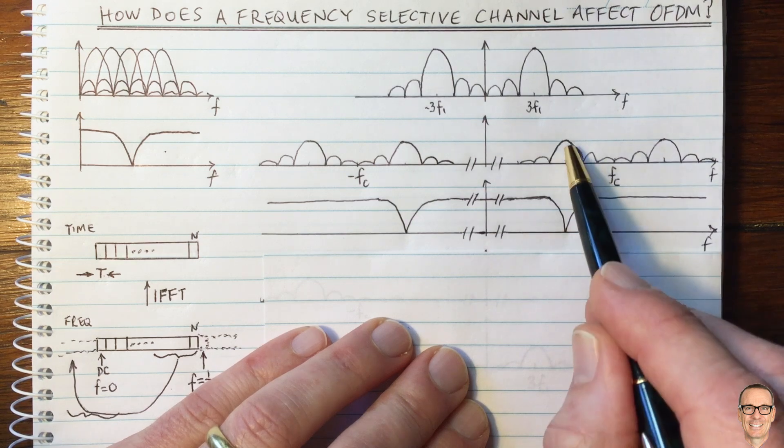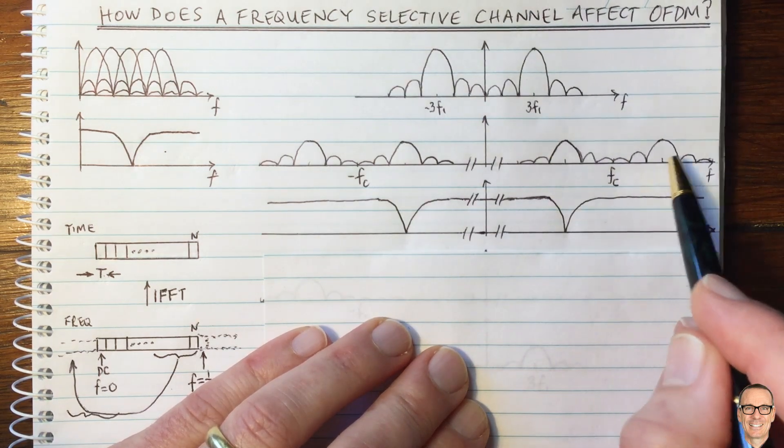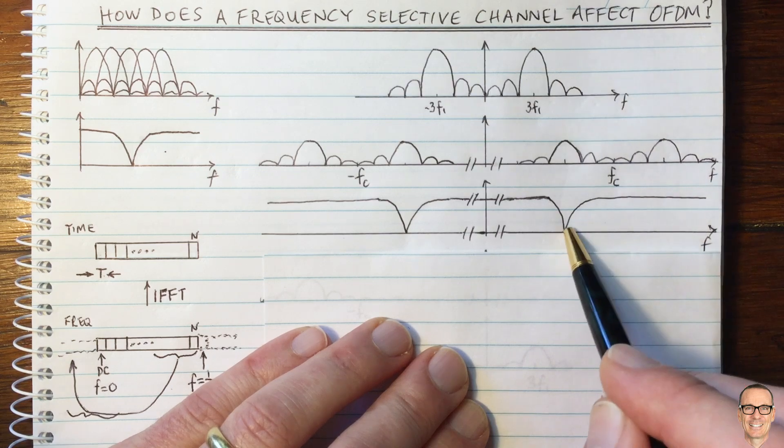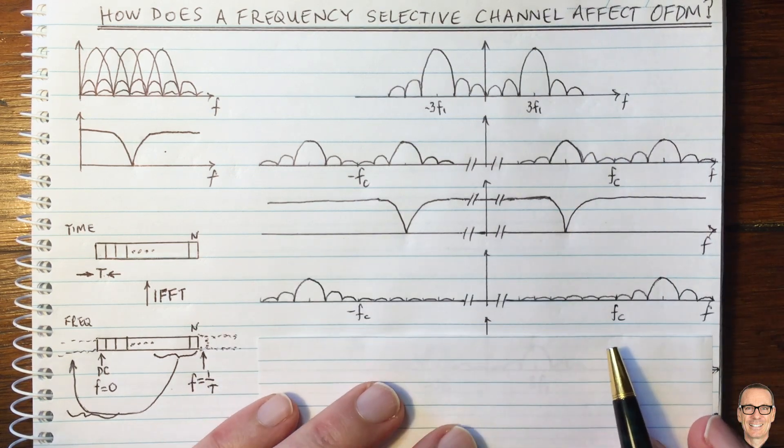Here we can see this notch is going to knock out this part of the subcarrier, but this part will not be affected by that notch. So when these get multiplied through going through the channel,